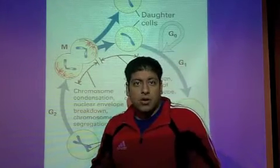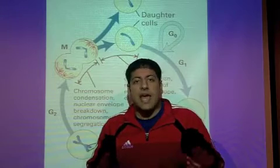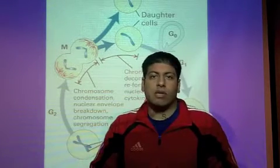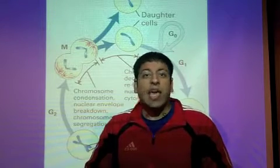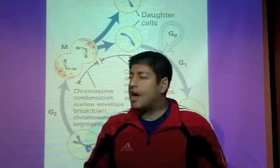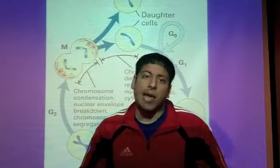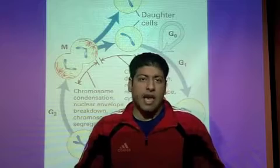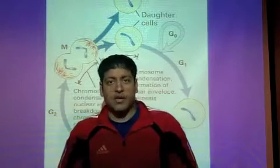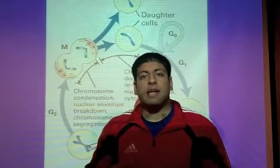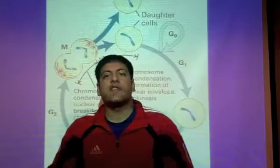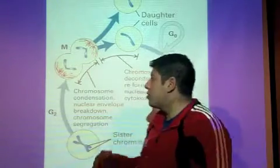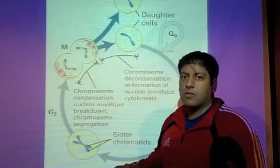It turns out there is a common factor involved known as MPF, the Maturation Promoting Factor. MPF is a combination of two proteins that come together: a kinase and another protein called cyclin. Together they form MPF, which acts as a signaling molecule, phosphorylating various proteins within the cell and causing the cell to go through these different transitional stages of the cell cycle.